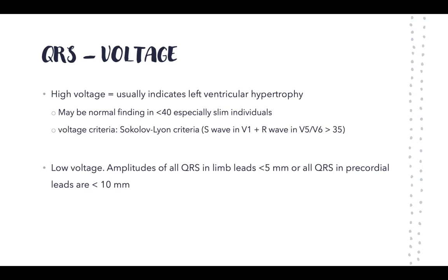Other things that can obstruct the electrical signal include COPD with barrel chest and air trapping in the lungs, which reduces the signal detected. Another example is fluid around the pericardium — a cardiac tamponade — where fluid around the pericardial sac obstructs the signal from reaching the leads, resulting in low voltage.